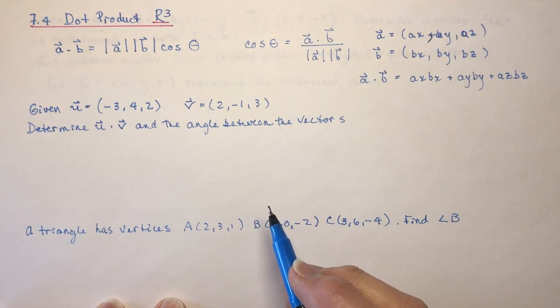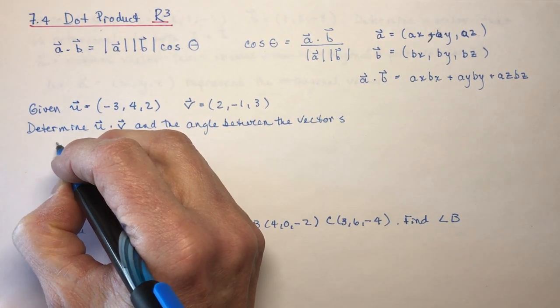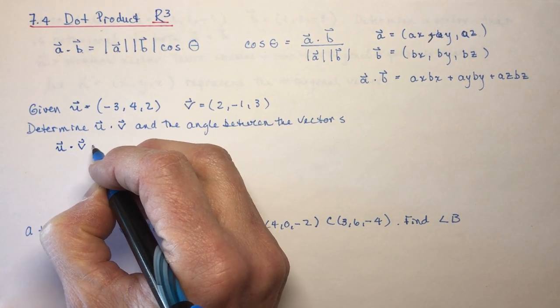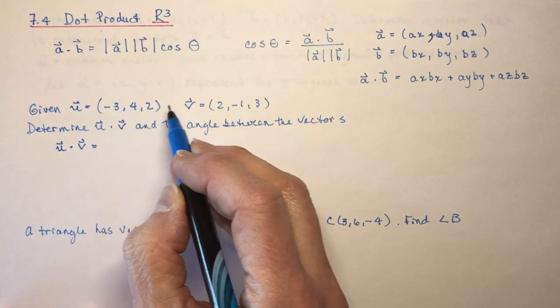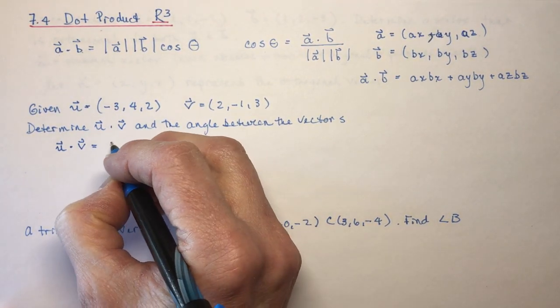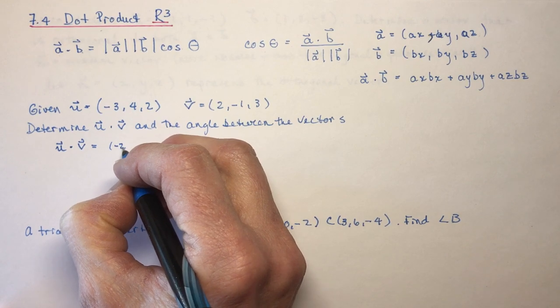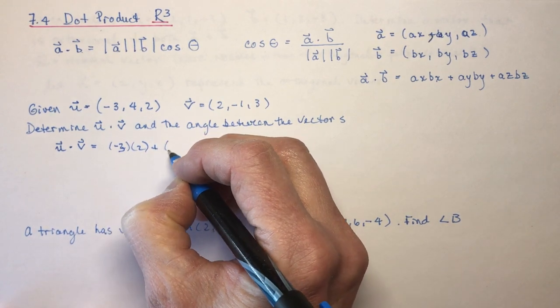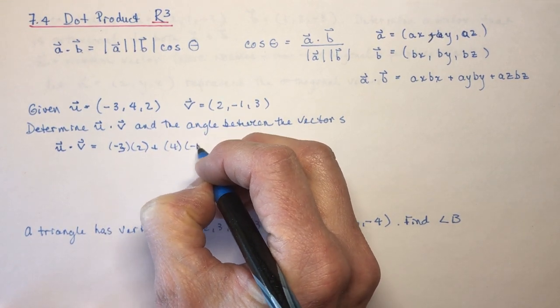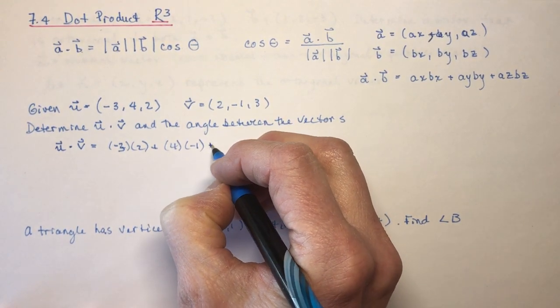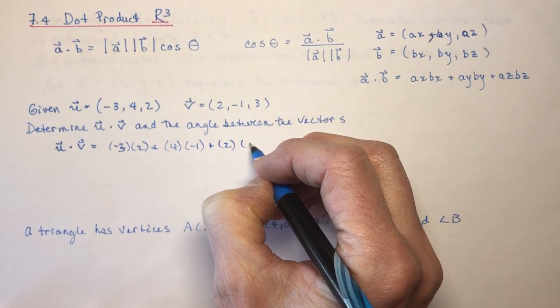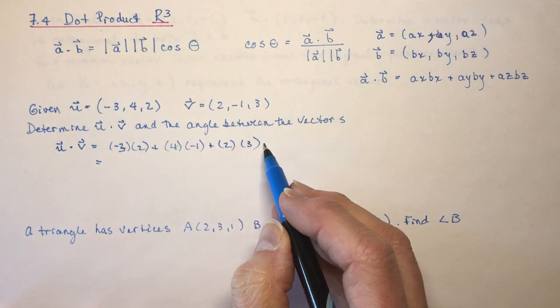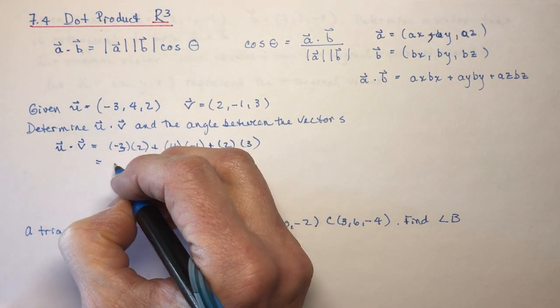So you remember how to use the dot product. All we do is multiply and add. So we multiply each of the variables. So minus 3 times 2 is minus 6. I'll write them all out here first. Minus 3 times 2 plus 4 times minus 1 plus 2 times 3, and if you do that, you would have minus 6 plus 6 and minus 4, so I get negative 4.